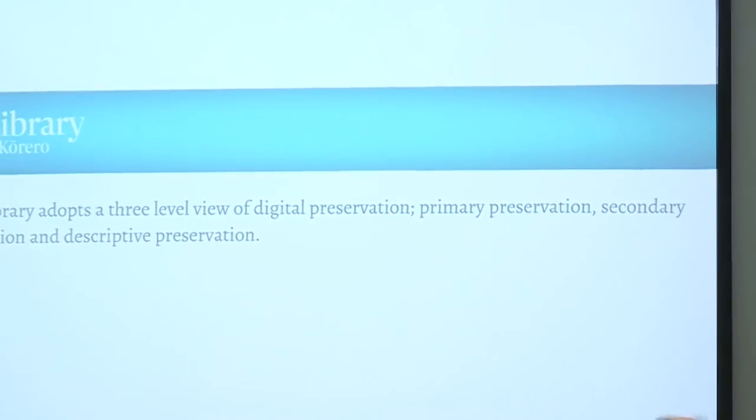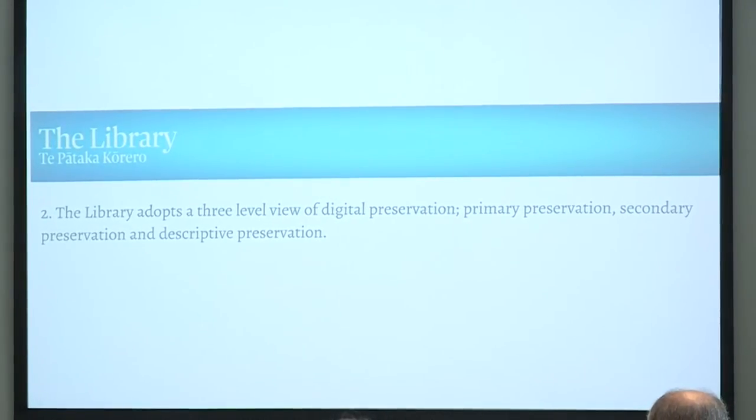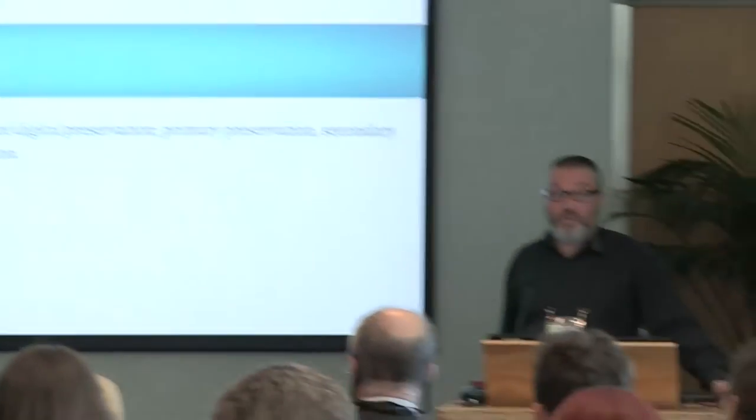The second principle is that the library adopts three levels of digital preservation: primary preservation, secondary preservation, and descriptive preservation. This was my way of encapsulating what I thought it was all about. Some may disagree, but this is what I've sold to the library. The first level is the most basic and easily understood — primary preservation — this is where you back your files up. Simple as that. You're ensuring you've got multiple copies.